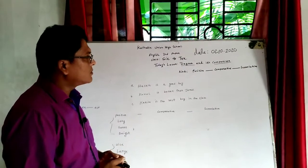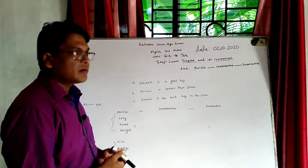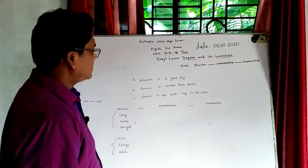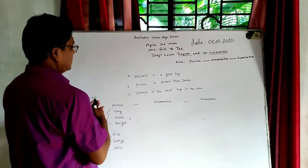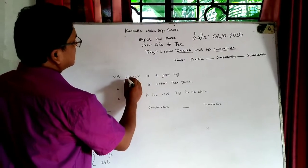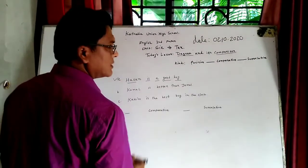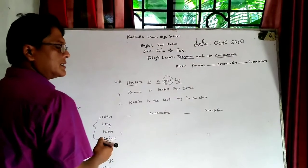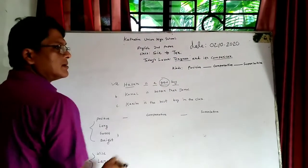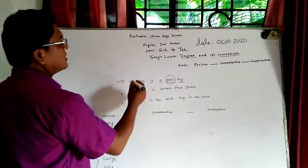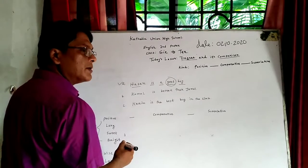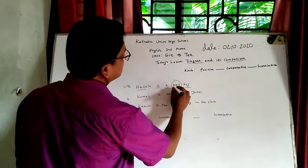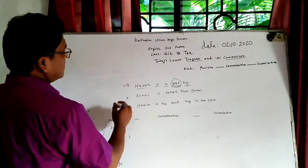Today I will tell you how to compare positive form to comparative and comparative to superlative. Look at this word: 'Hasan is a good student.' Here, 'good' is an adjective. It is positive form, because Hasan doesn't compare with anybody — he doesn't compare with any noun or pronoun. So here, 'good' is positive degree.